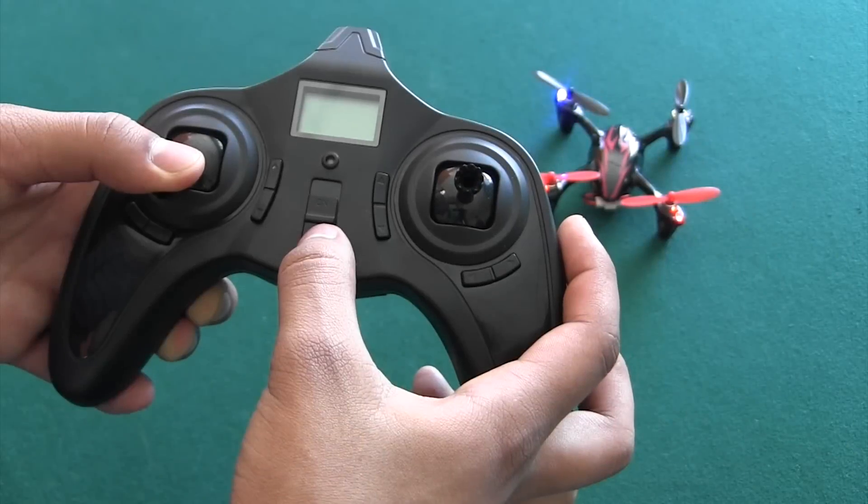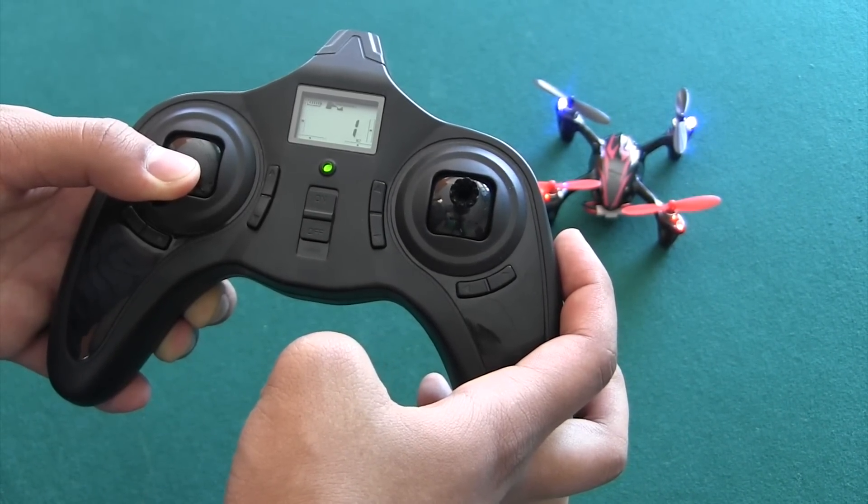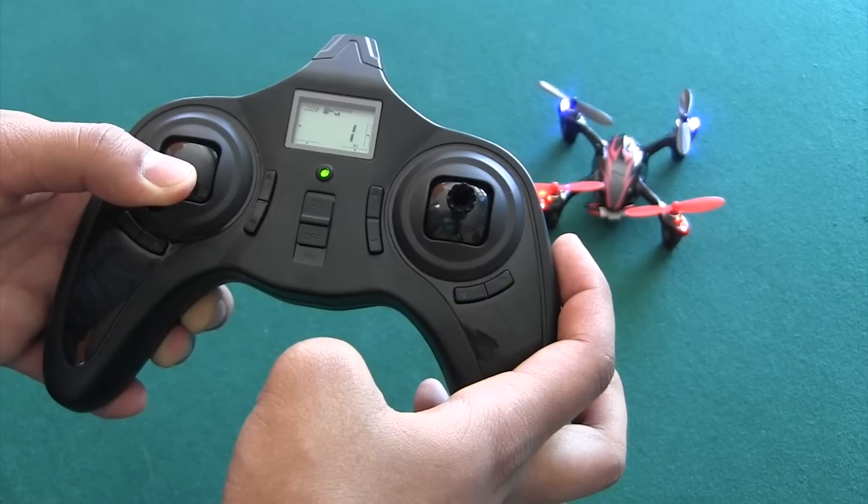The next step is calibrating the quadcopter. Set the quadcopter down on a flat surface. Power on the transmitter, making sure the left stick is all the way down and the right stick is in the neutral position.